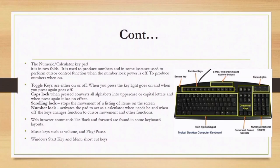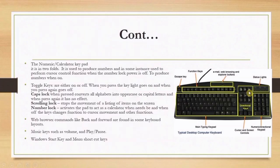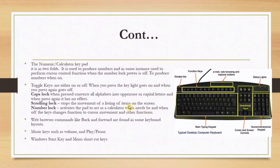Toggle keys are either on or off: when you press the key, the light goes on; when you press again, the light goes off. We have three of them: Caps Lock, Scroll Lock, and Num Lock. The Caps Lock is used to convert all alphabets into uppercase or capital letters. Scroll Lock stops the movement of a listing of items on the screen.